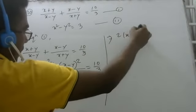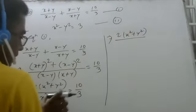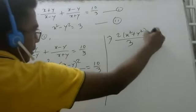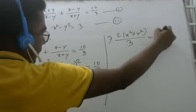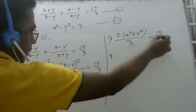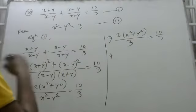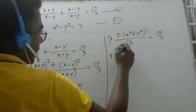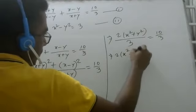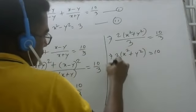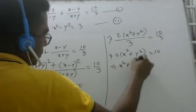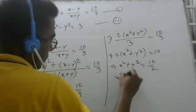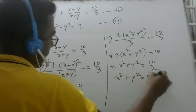2 into (x squared plus y squared) divided by (x squared minus y squared) is equal to 10 by 3. So in total, 2 into (x squared plus y squared) is equal to 5.